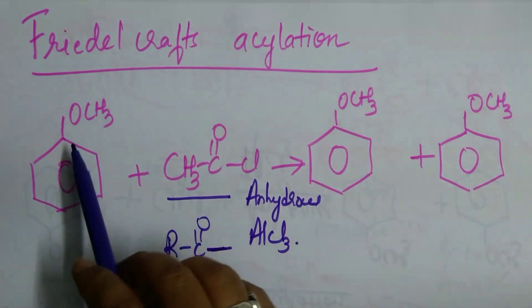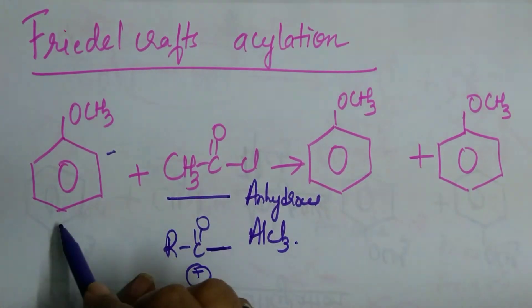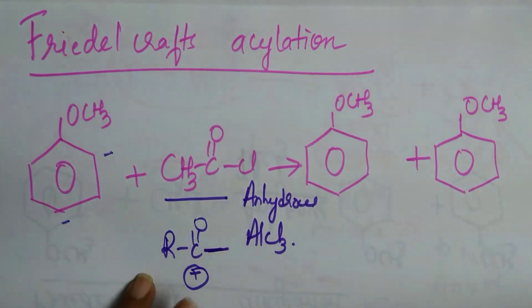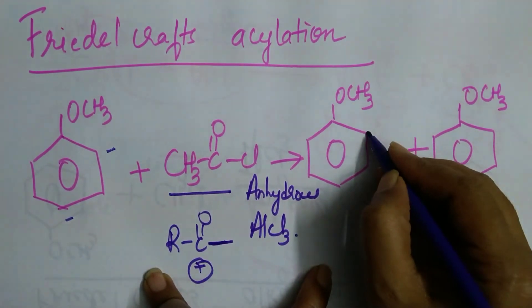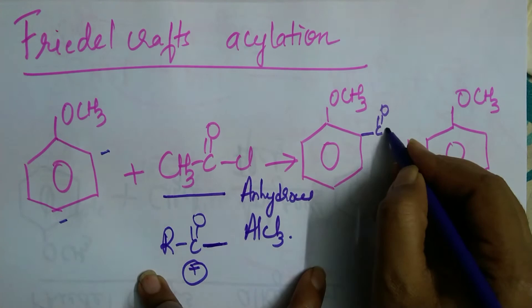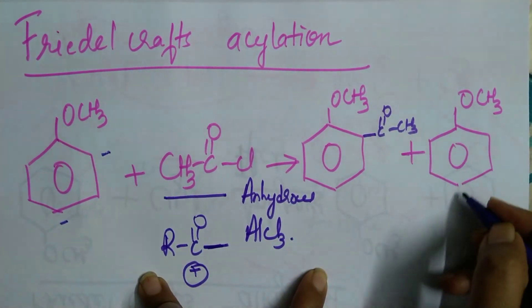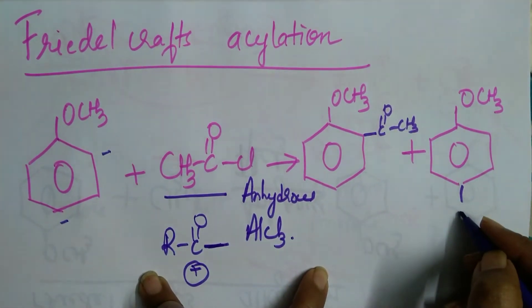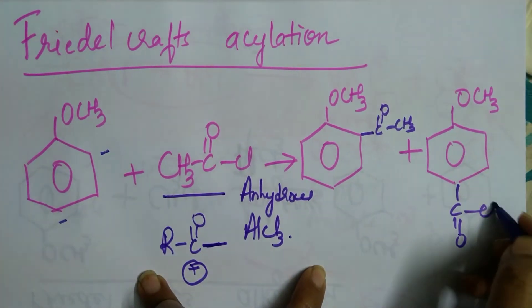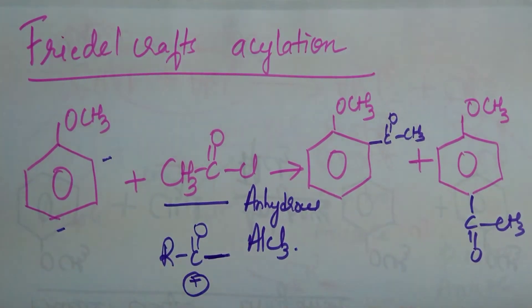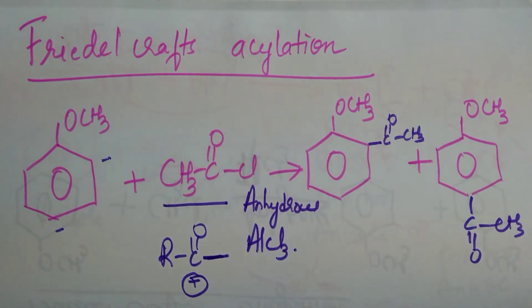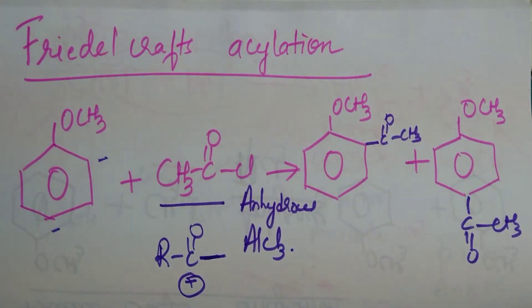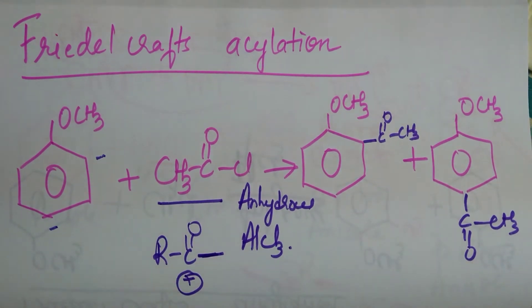We know OCH3 is a donating group. So at ortho and para position we get a negative charge. So COCH3 will attack either ortho position or para position. You get ortho-substituted and para-substituted compounds. Done. I think with this we have completed alcohols, phenols and ether chapter.